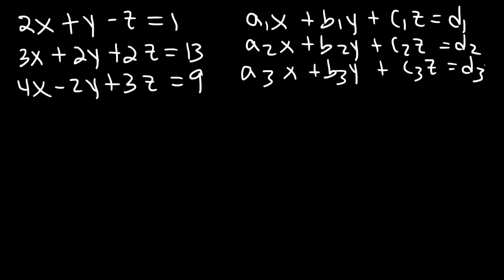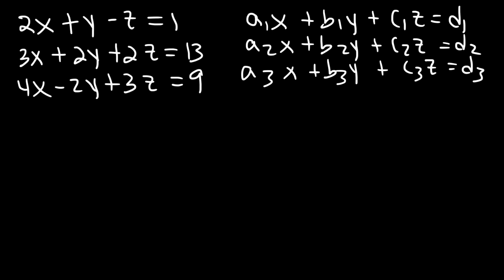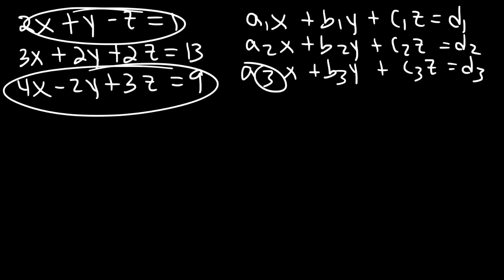So the letters a, b, c, and d represent the coefficients in this equation. And the subscripts 1, 2, 3 tell us the row that we're dealing with. So subscript 1 is for the first row, and subscript 3 is for the third row.